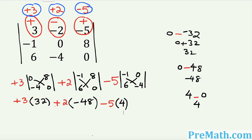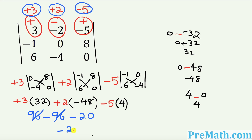Now multiply everything out: positive 3 times 32 is positive 96, positive 2 times negative 48 is negative 96, and negative 5 times 4 is negative 20. The positive 96 and negative 96 cancel out, so our final answer for this 3×3 determinant is negative 20.